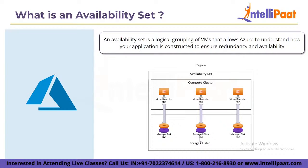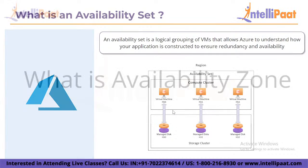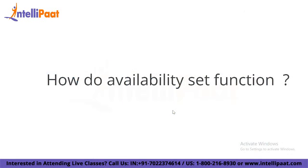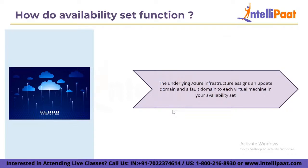The availability set is free — you just pay for each virtual machine instance that you generate. Availability zones are geographically isolated areas within data center regions where public cloud services originate and operate. Regions are geographic areas where public cloud service providers' data centers are located. Businesses choose one or more global availability zones for their services based on their needs. The underlying Azure infrastructure assigns an update domain and a fault domain to each virtual machine in your availability set.